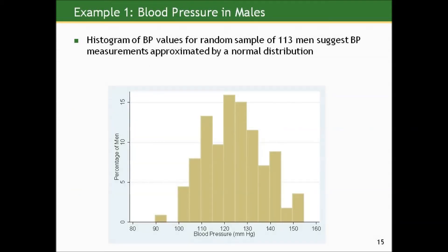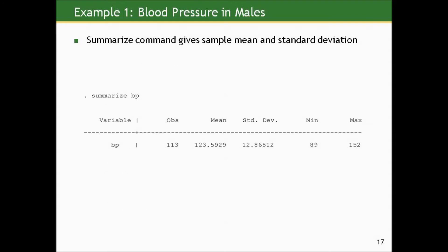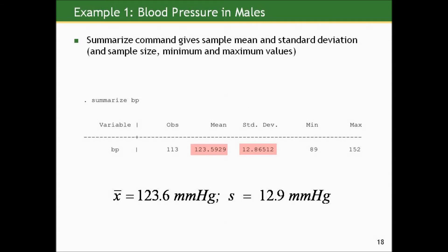Let's go back to the blood pressure example with men. Here again is the histogram of blood pressure values for a random sample of 113 men, which suggests that blood pressure measurements are approximated by a normal distribution. Using the list command in Stata — list BP in 1/10 — shows the first 10 values of blood pressure. Using the summarize command gives the sample mean and sample standard deviation. My sample mean is 123.6 millimeters of mercury, and my sample standard deviation is 12.9 millimeters of mercury.